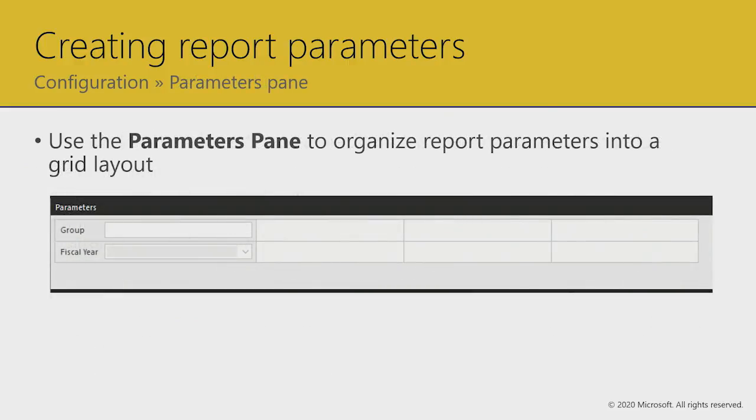There is a pane dedicated to report parameters. This pane is sort of like a matrix — hidden rows and columns — allowing you to place your report parameters and giving control over what the user sees in their parameter pane. Simply drag and drop to put parameters where you'd like them. If you need to add a new row or column, just right-click — the context menus are straightforward to produce the layout that works best for your report design.